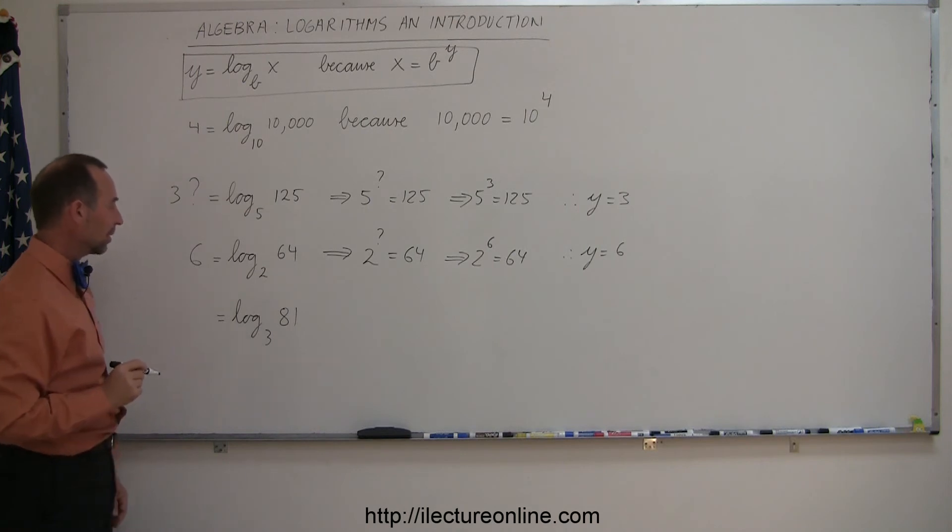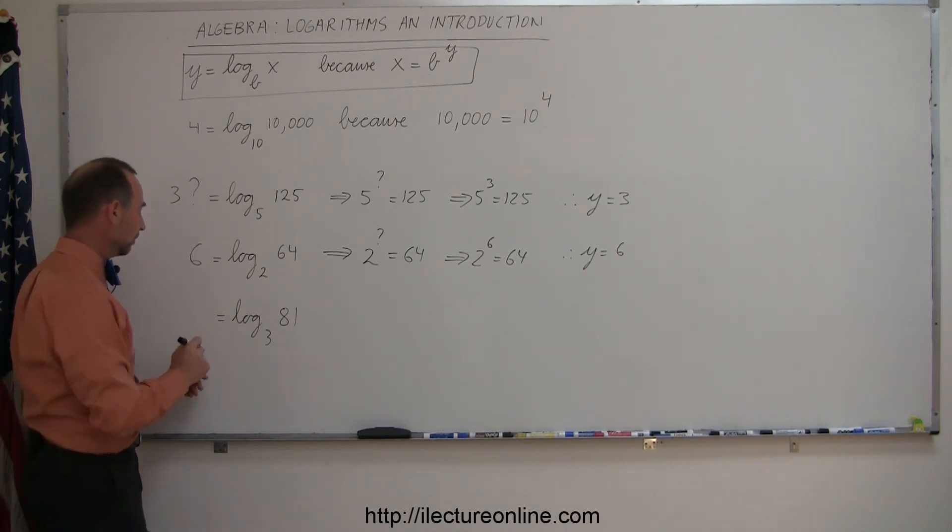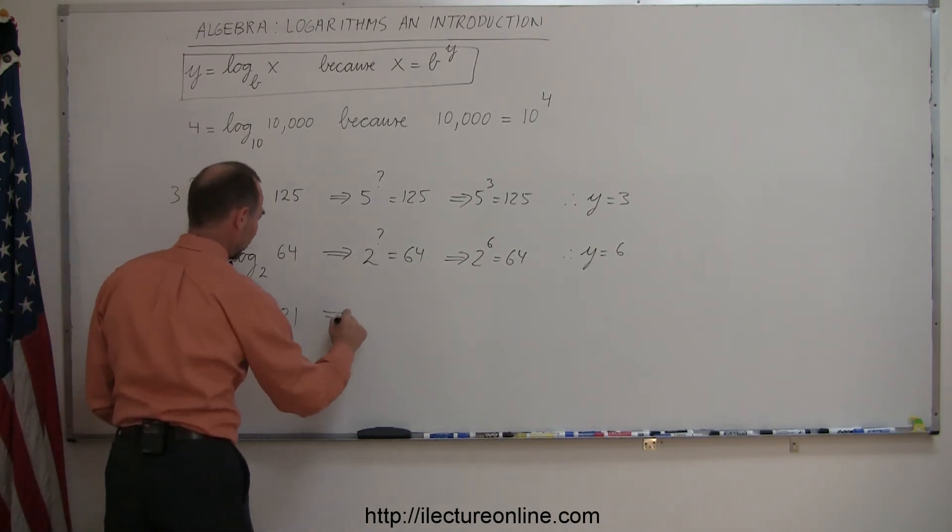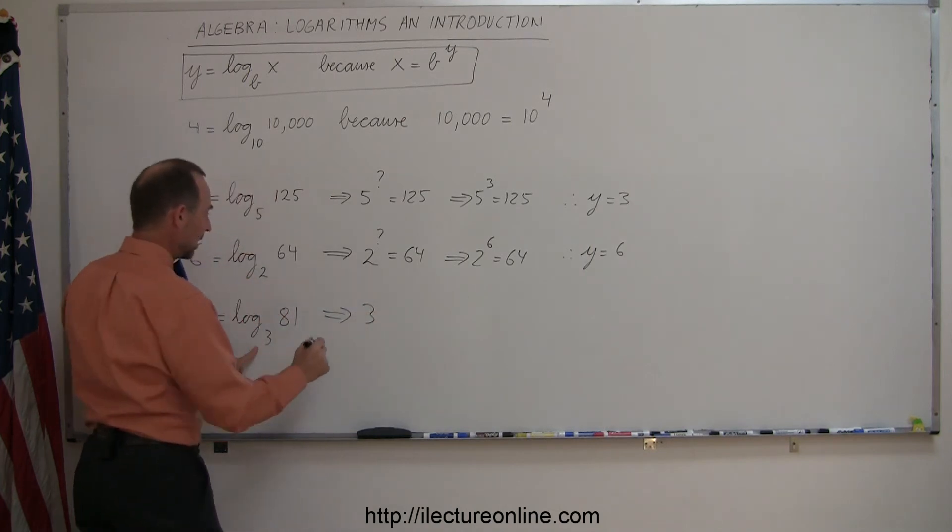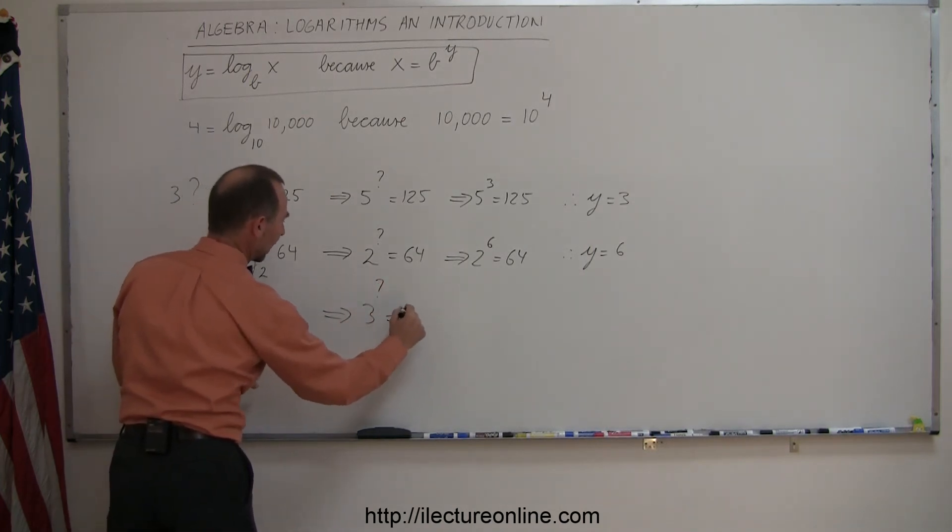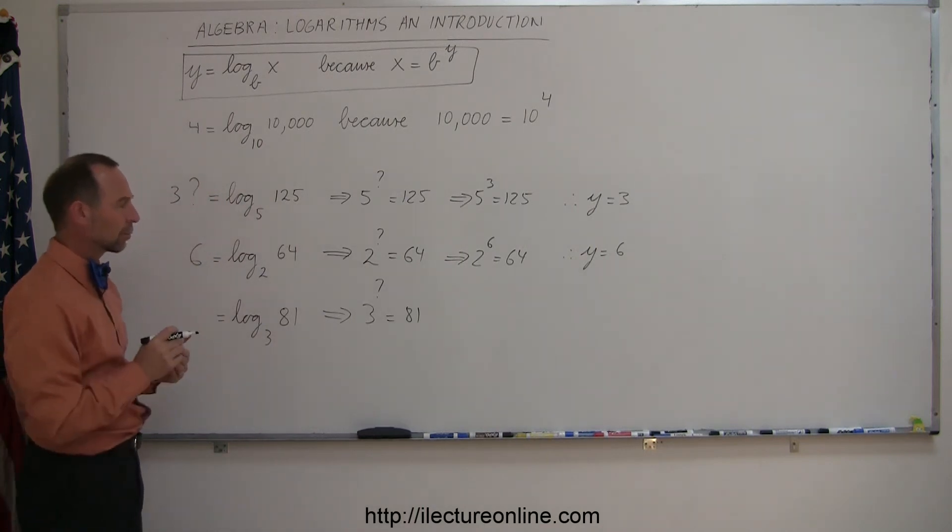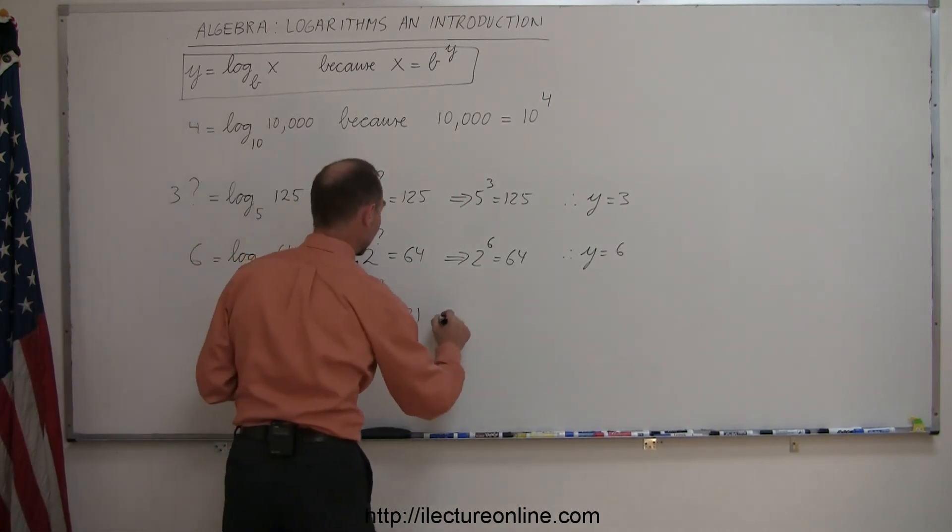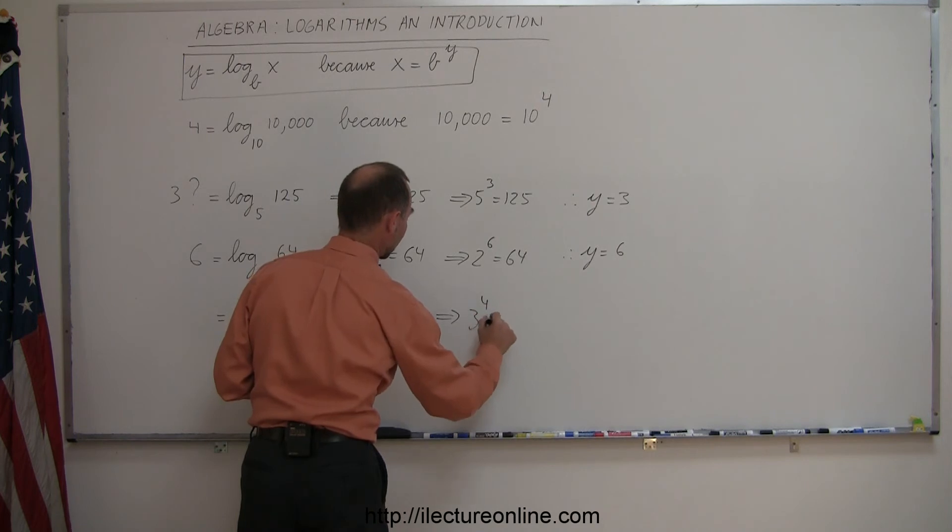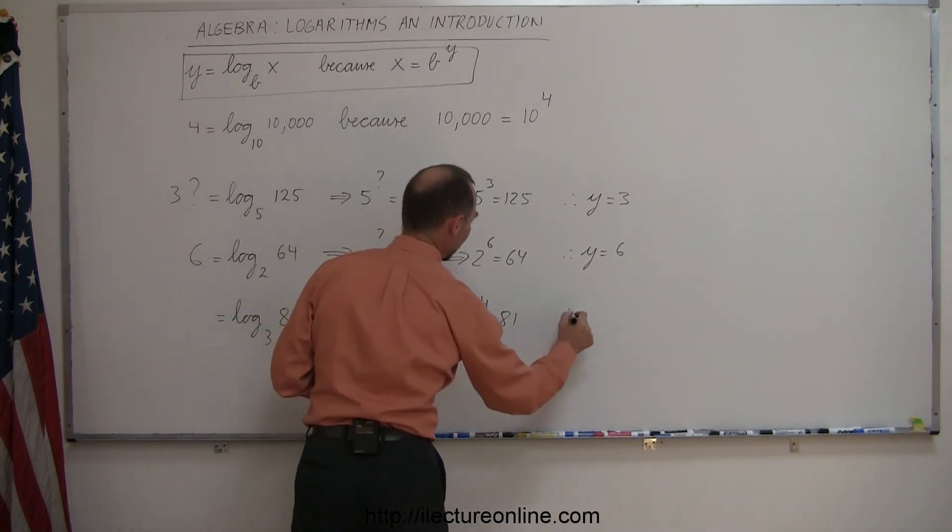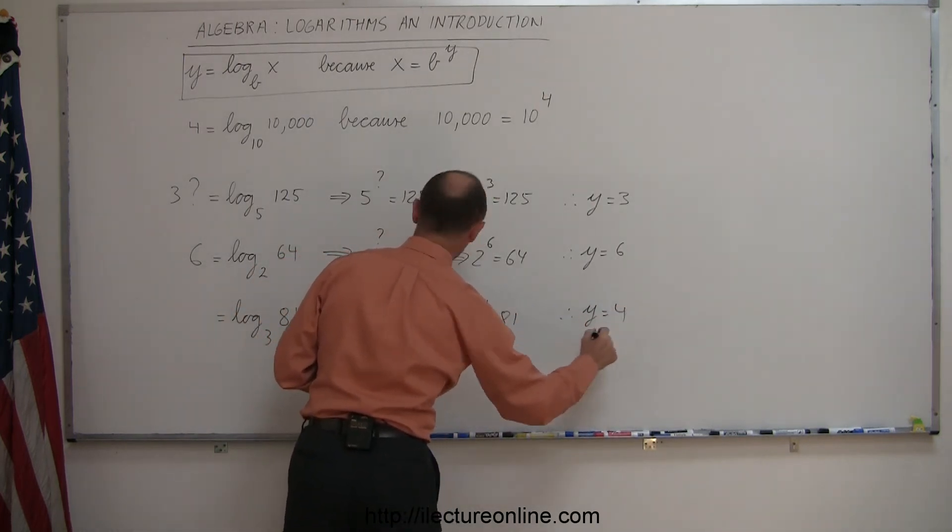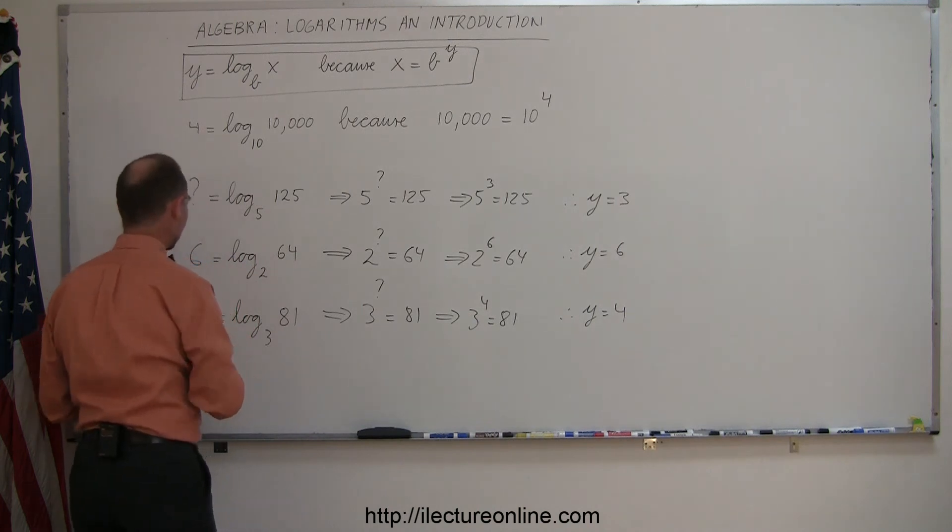Finally, another example here. We're looking for a number such that when we take the base 3 and raise it to some exponent, we get 81. What is that number? Well, 3 to the 2nd power is 9, 3 to the 3rd power is 27, 3 to the 4th power is 81. So therefore, the answer is 4. So 3 to the 4th power gives us 81, and therefore y would equal 4.